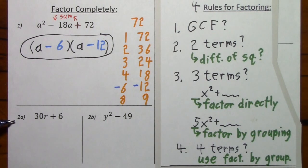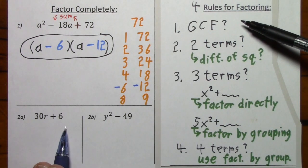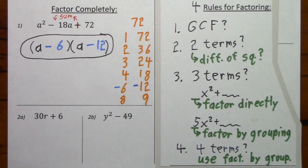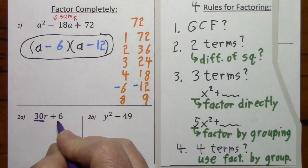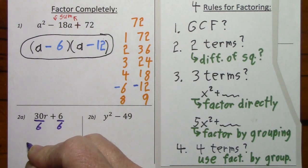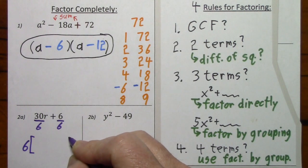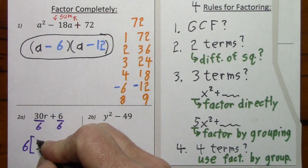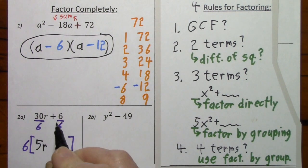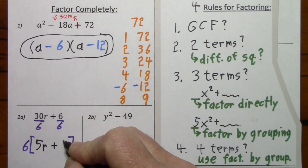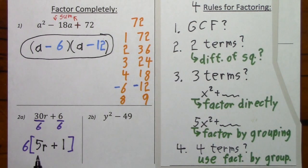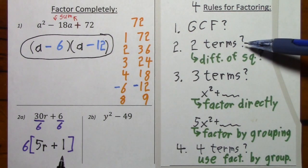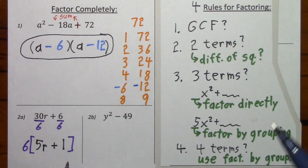Looking at 2a: do you have a GCF? Yes, so we factor it out. You could factor a 6 out of each term. Whatever you're going to factor out has to sit in front of your bracket. For the first term we'd be left with 5r, and continuing down the list with what's inside the bracket: do you have two terms? Yes. Is this a difference of squares? No. So this is the factored form of the original polynomial.